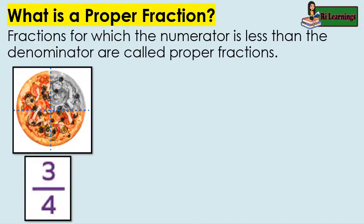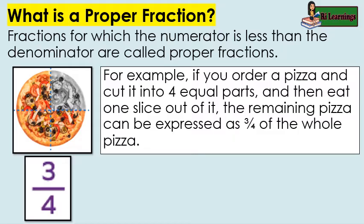What is a proper fraction? Fractions for which the numerator is less than the denominator are called proper fractions. For example, if you order a pizza and cut it into four equal parts and then eat one slice out of it, let's count the remaining pizza parts: one, two, three. That is your numerator, and your denominator is the number of parts of the whole pizza, which is four. The remaining pizza can be expressed as three fourths of the whole pizza.